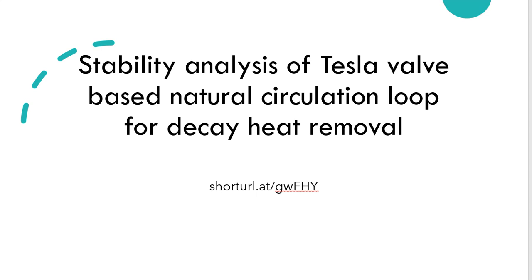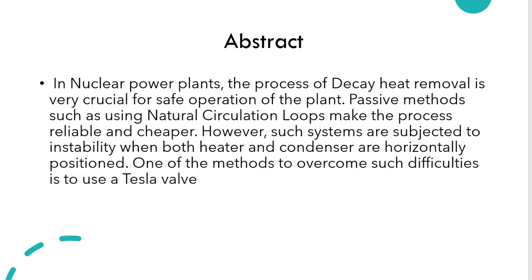Just a general overview: in nuclear power plants, the process of decay heat removal is very crucial for safe operation. Using natural circulation loops makes the process more reliable and cheaper. However, such systems are subjected to instability when both heater and condenser are horizontally positioned. One of the methods to overcome such difficulties is to use a Tesla valve.